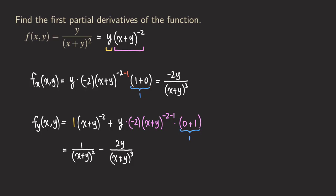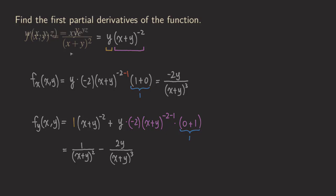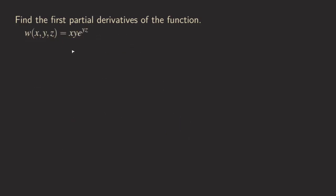I'm going to move on to talk about another example for taking partial derivatives, because our main focus here is not to learn how to simplify using algebra. In this third example, I want to show you how to find the first partials for a function of three variables. You can see that w is a function of x, y, and z. That means we are going to get three answers: differentiating with respect to x, with respect to y, and with respect to z.